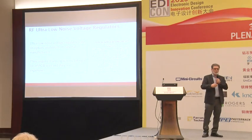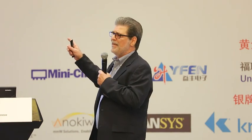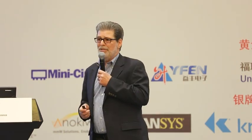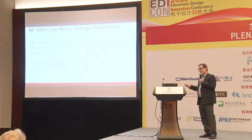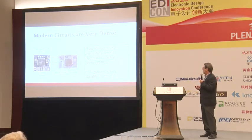Companies realized this was a problem and started making linear regulators designed specifically for RF applications. There are two problems with those: number one, they're very expensive; and number two, they take a lot of physical space on the board because of the number of capacitors required to filter the noise. You'll see a linear regulator chip with five capacitors required in addition to the chip. These do provide very low noise and do improve phase noise, but it's not a realistic solution because of cost and physical size.